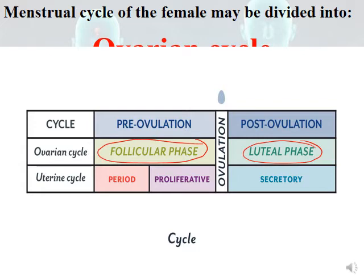Pre means before ovulation, post means after ovulation. As for the uterine cycle, it concerns the uterus. We have menses, which lasts about four to six days depending on the female, then the proliferative phase pre-ovulation, and the secretory phase after ovulation.